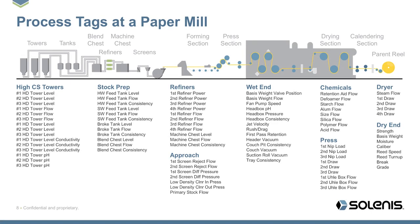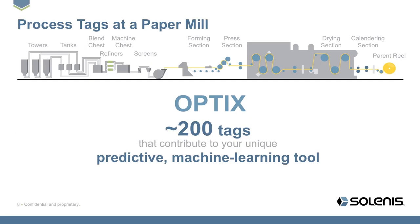What we've distilled down from the customer's packaging operations is this: we've condensed from around 5,000 PI tags down to the 200 most important. By looking at these 200 specific PI tags, we have developed a predictive machine learning tool — a tool that actually learns from its environment, gets smarter, and adapts.